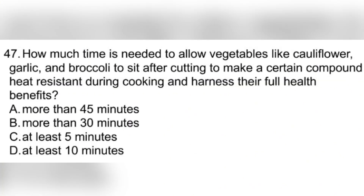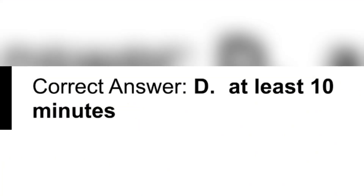Question 47. How much time is needed to allow vegetables like cauliflower, garlic, and broccoli to sit after cutting to make a certain compound heat resistant during cooking and harness their full health benefits? A. More than 45 minutes. B. More than 30 minutes. C. At least 5 minutes. D. At least 10 minutes. Correct answer: D. At least 10 minutes.